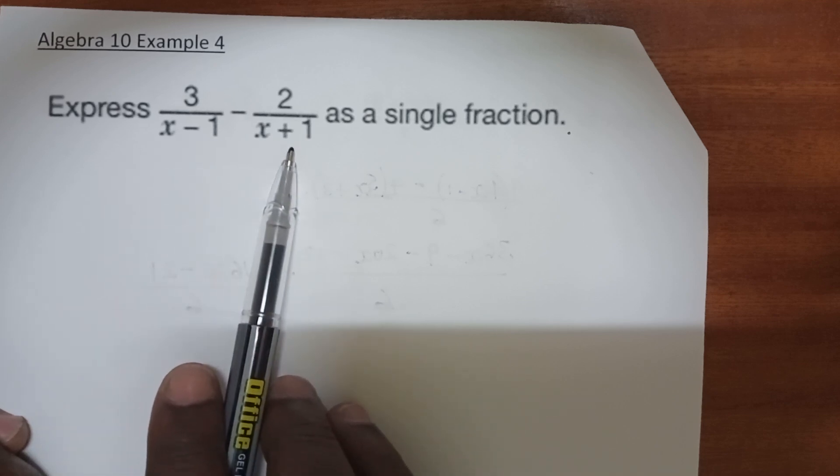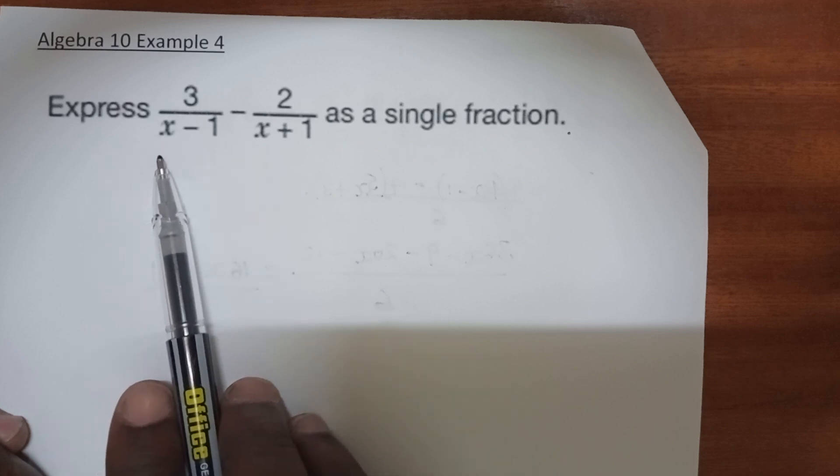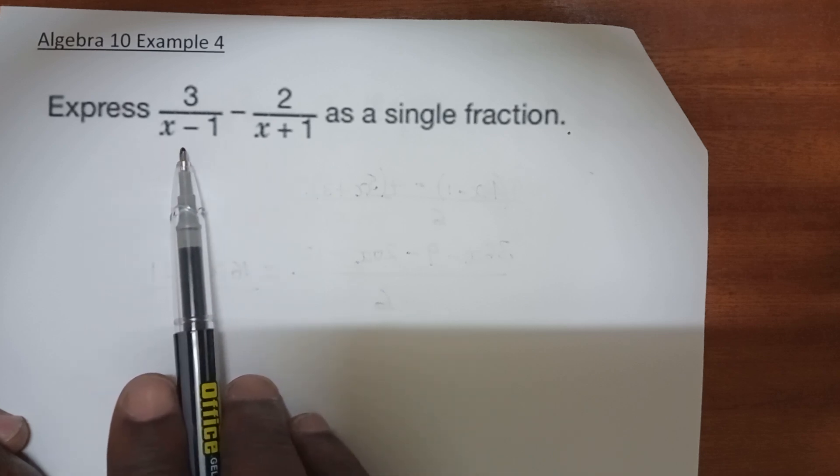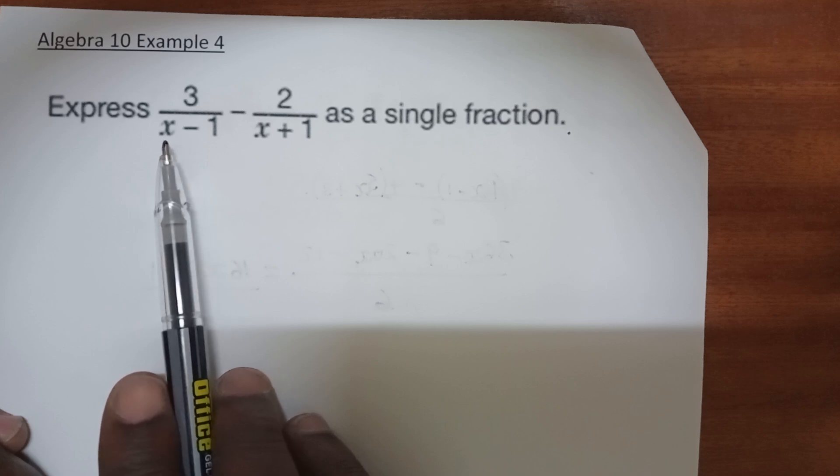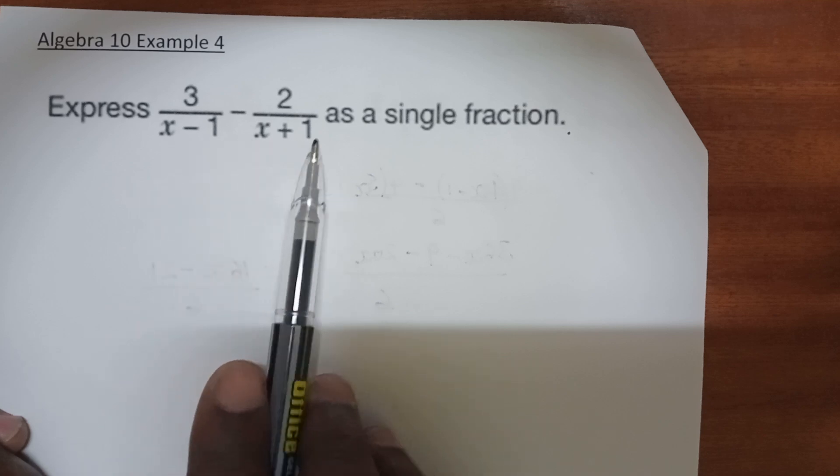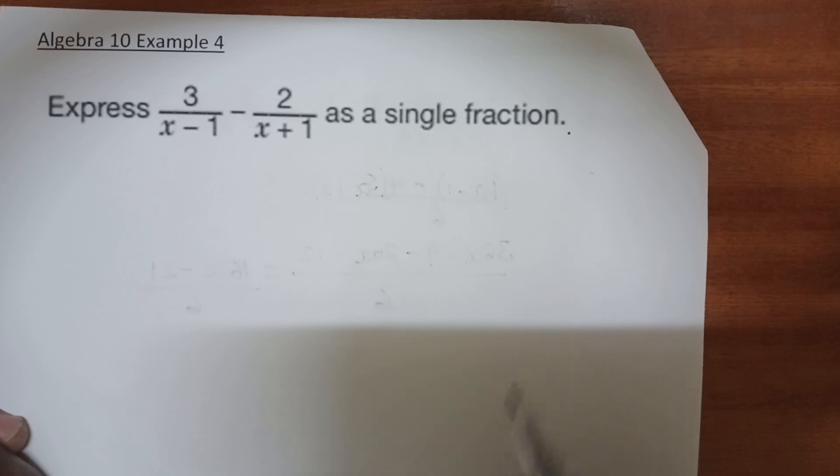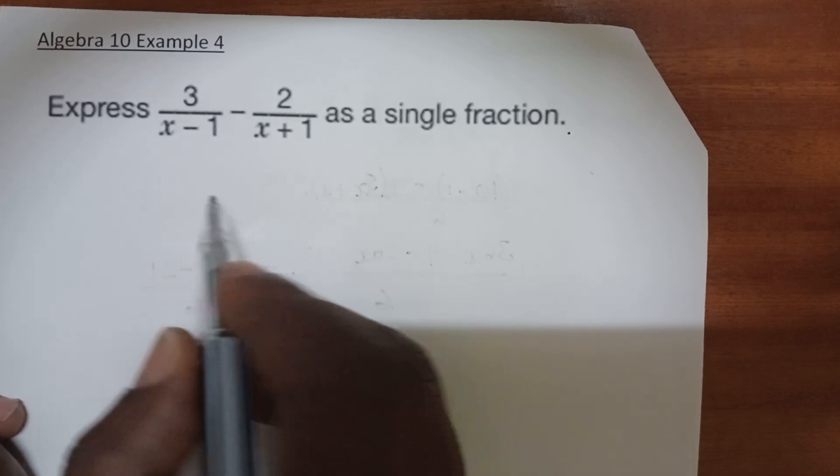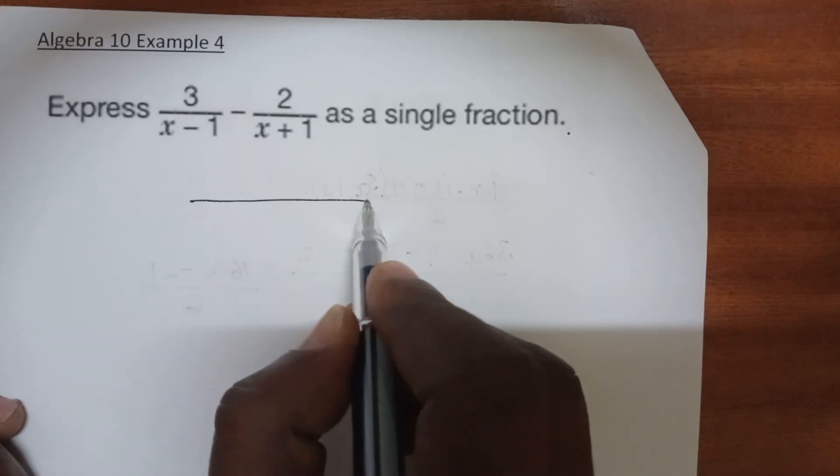They are unknowns - we have x minus 1 and x plus 1. And in such a scenario, we have the product of the two brackets as the LCM, and this is the safest thing to do.